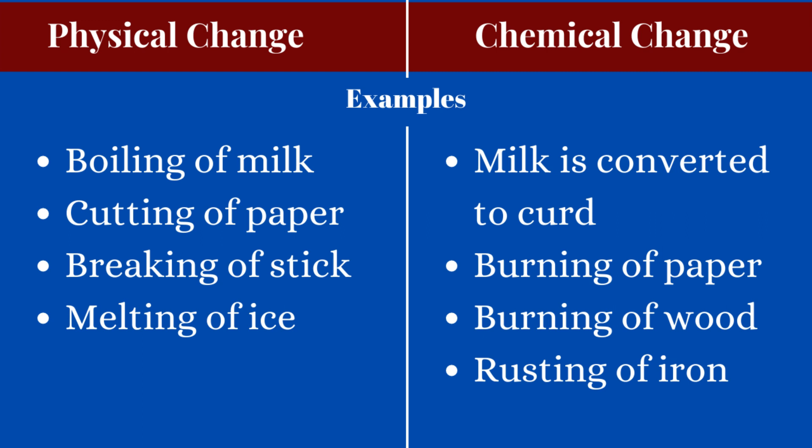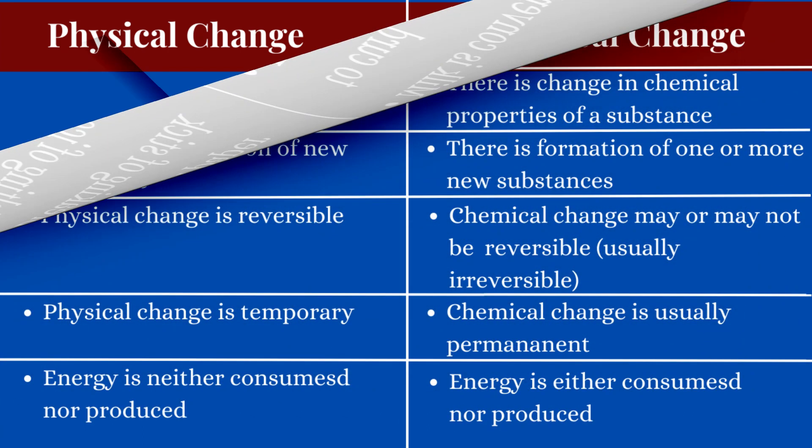Just cutting paper into pieces is a physical change, while burning of paper is a chemical change. If we break a stick it's a physical change, but if we burn wood it's a chemical change. Melting of ice is a simple physical change, while rusting of iron is a chemical change.